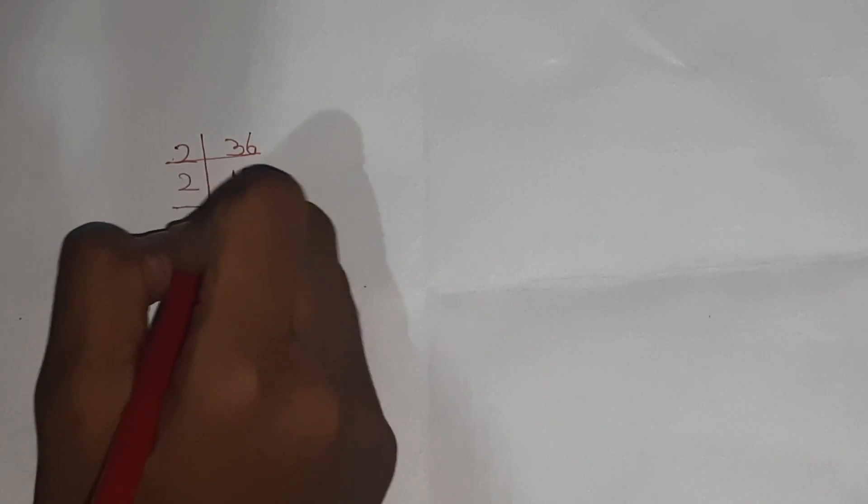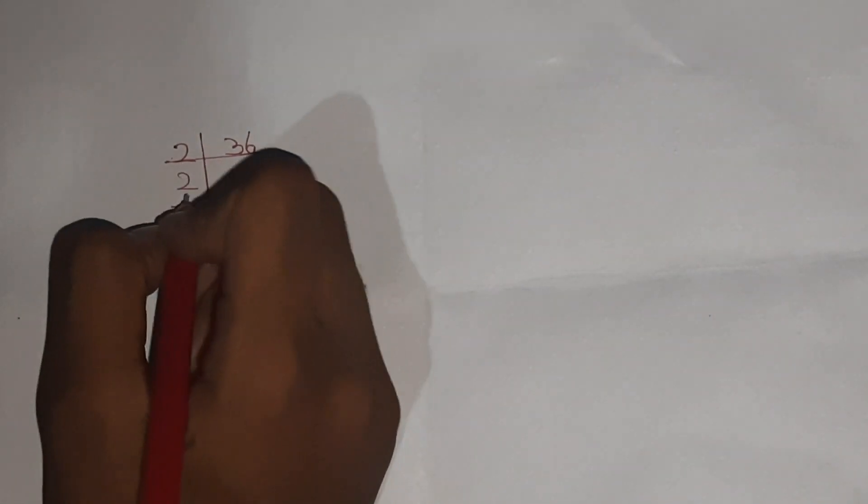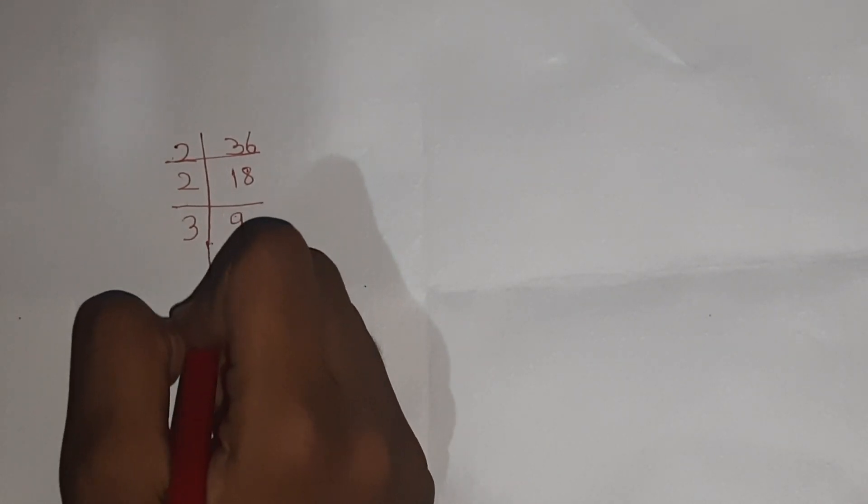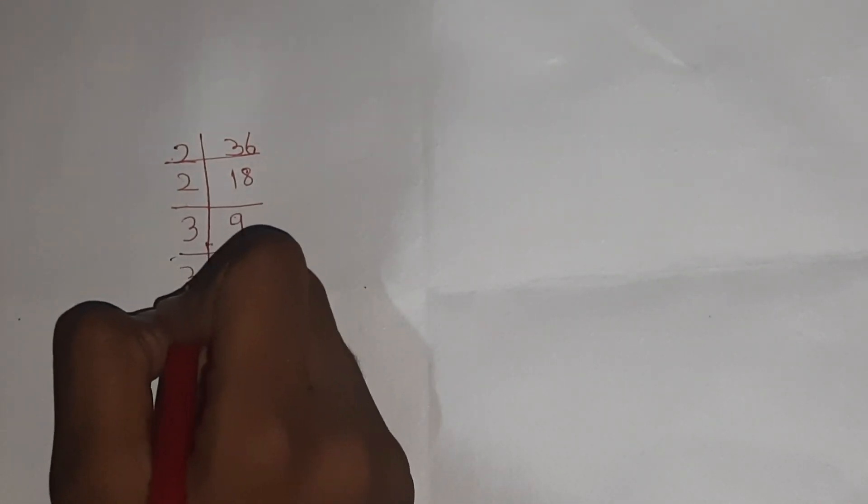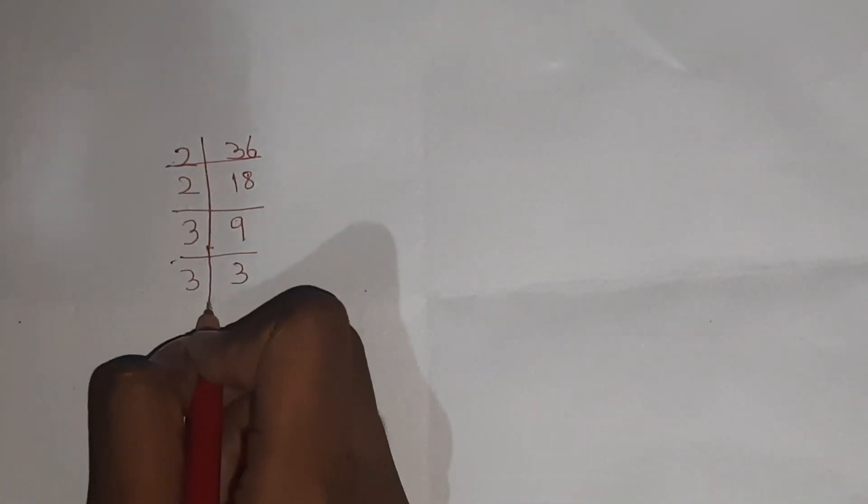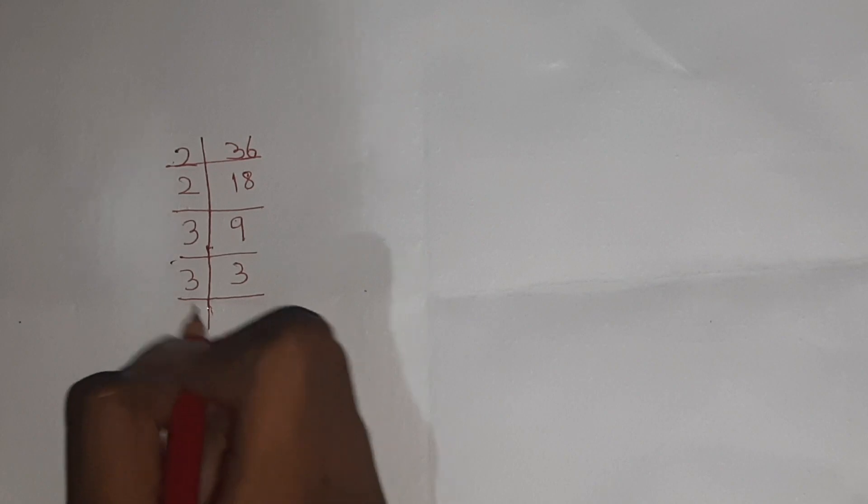First, we will work through an example. We take the number and divide it. We get 9, then 3 threes are 9, then 3 ones are 3. This is the division method.